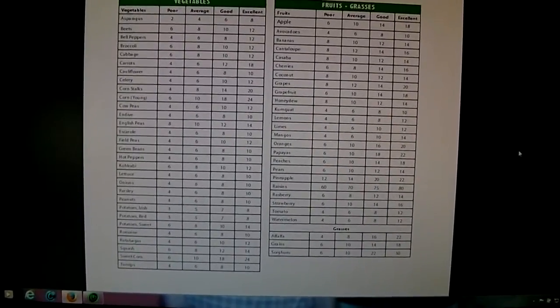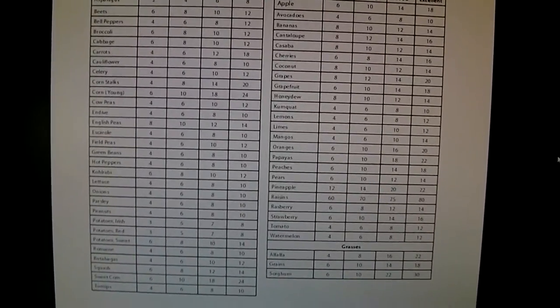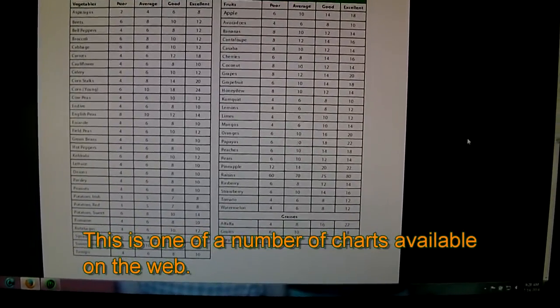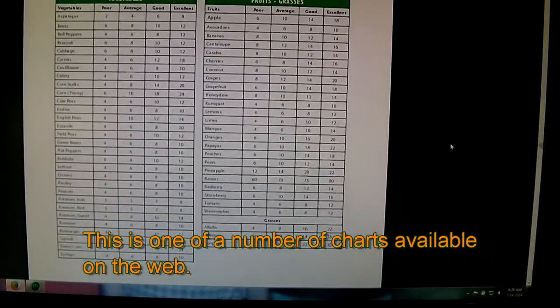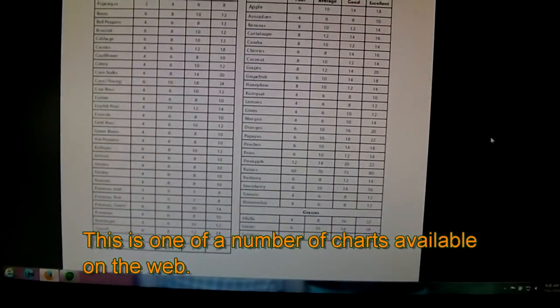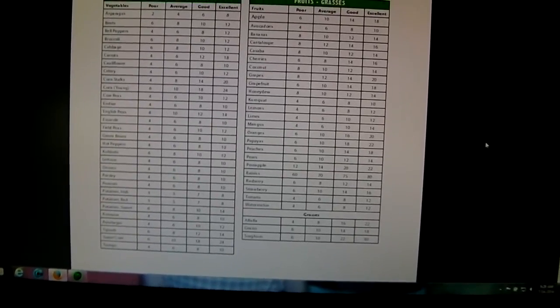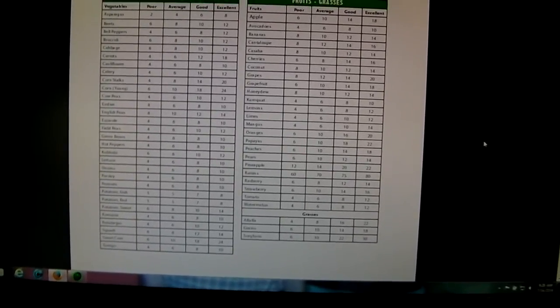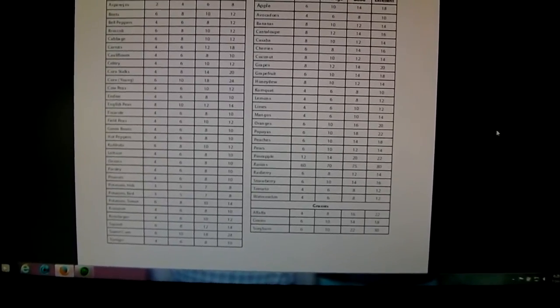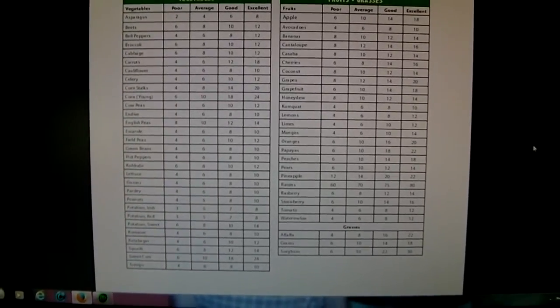This is just a computer screen shot to show you that you can find charts on degrees Brix. Again, that's the amount of sugar that's in your plants and your vegetables and your fruits. On this chart, this shows that tomatoes should show somewhere in the range of 8% to 12% for a good to excellent tomato. Anything below that's not very good. So we're going to find out how well we did with this.